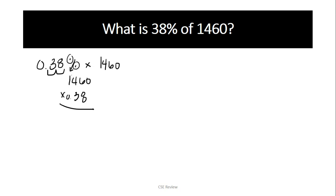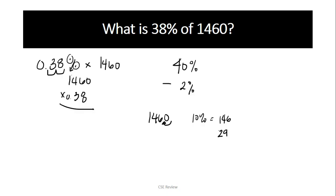In my case, since 38% is only 2% away from 40%, I use that. So what I'll do is 40% minus 2%. Why is 40% easy? Because it's just two 20s, or four 10s. The 10% of 1460 — you just move the decimal place one step — so 10% equals 146. We need four of those. Two of them is 292, four of them is 16 short of 600, so that is 584. That is your 40%, which is 584.